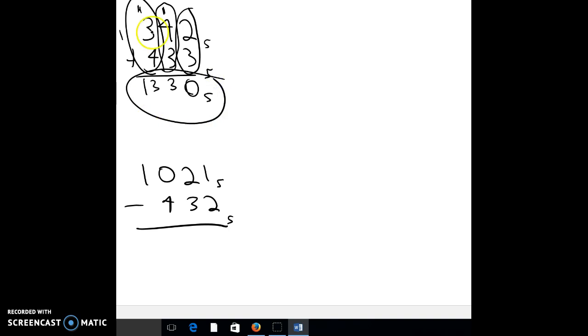Now, if we draw the pictures, this would be 3 flats and 4 longs and 2 singles, and then 4 flats for the second number, 3 longs and 3 singles. So 433, 342 looks the same in base 10 or base 5. It's just what's inside the regrouping. Singles are singles, that's fine.